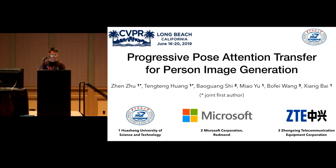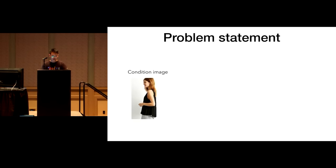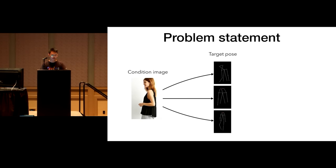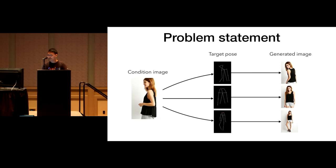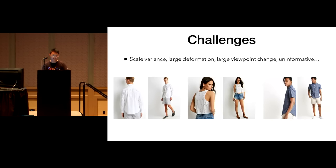I'm Zheng Zhu from Huazhong University of Science and Technology. I'm presenting our paper, Progressive Pose-Attention Transfer for Person Image Generation. Given a person image and some target poses, we wish to generate this person's images under those target poses. The challenge of this task is to generate images of huge scale variance, large deformation, and viewpoint changes, which may be difficult for many successful image-to-image translation methods.